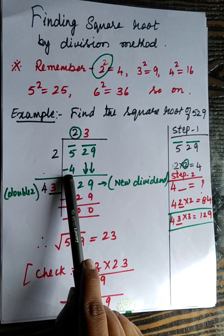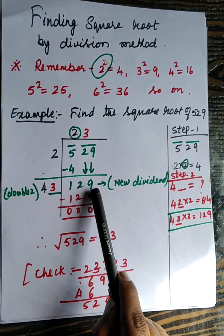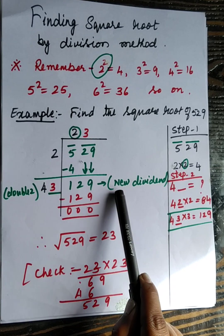2 times 2 is 4. Then when you subtract you will get 1. Bring down this 29. 129 is the new dividend.